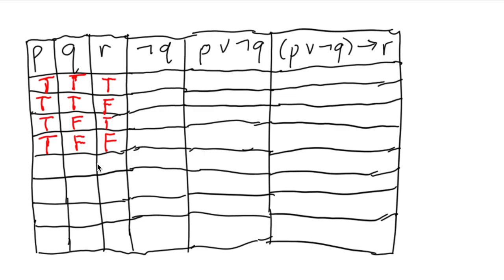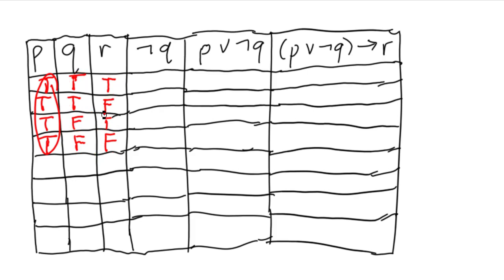Looking at this, we can see a pattern arising. In the first column p, the first four rows are all true. Then divided by two, we get true true false false. We then write all false for the last four rows of p — so false, false, false, false.